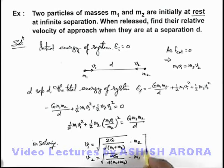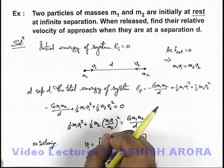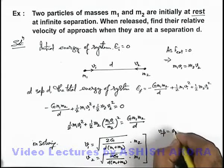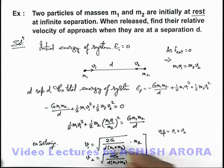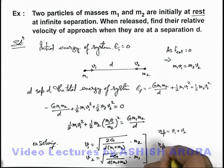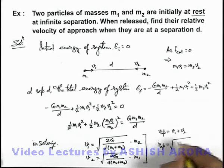And if these are the velocities of m1 and m2 when they are approaching each other, so we can write their approach velocity should be v1 plus v2. If we substitute the values of v1 and v2 here, the result of approach velocity in this expression will be root of twice G, m1 plus m2 by d. That will be the answer to this problem.